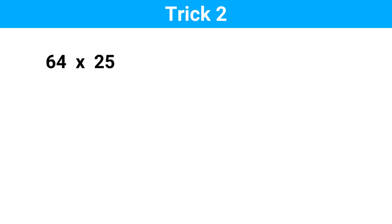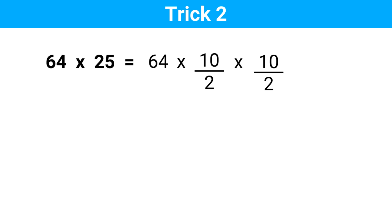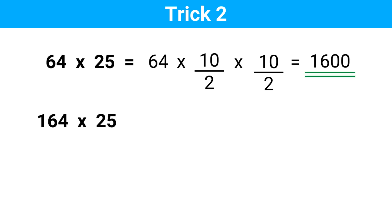Now let's say we have to multiply 64 times 25. We can write this as 64 times (10/2) times (10/2). So 64 divided by 2 is 32, and half of 32 is 16, and put two 0s at the end. Next one: 164 times 25. 164 divided by 2 is 82, and half of 82 is 41, and add two 0s to the end. This is our answer.